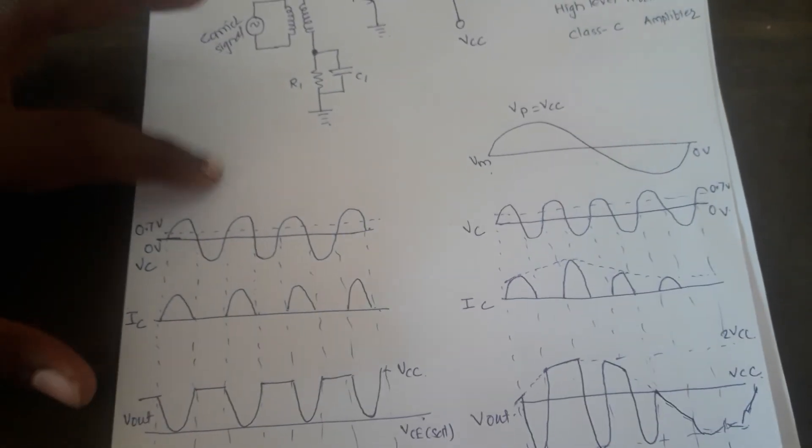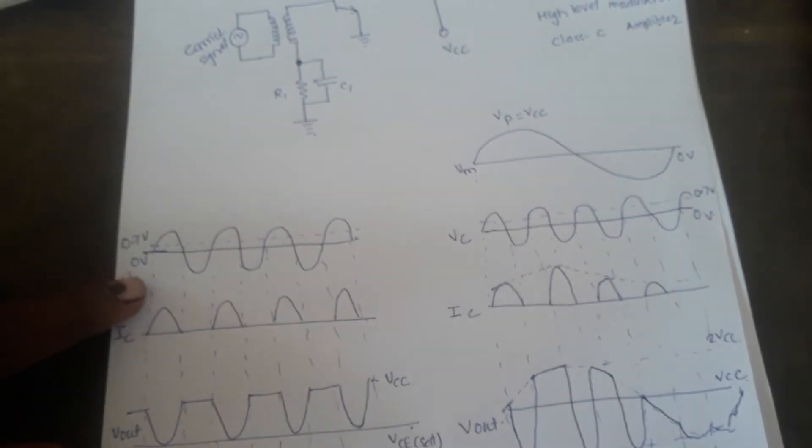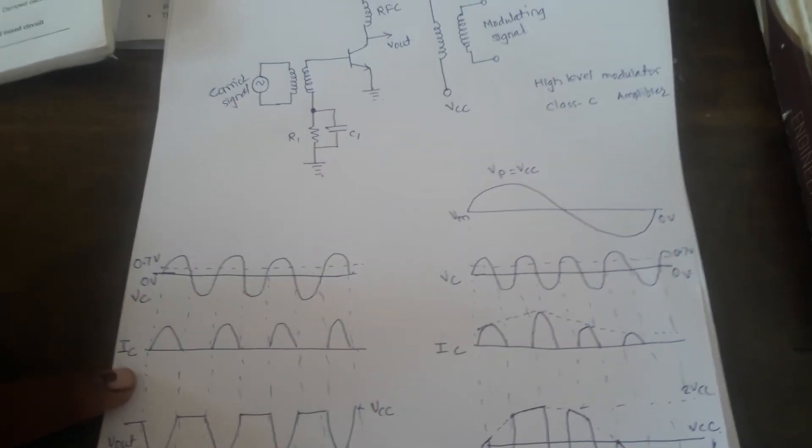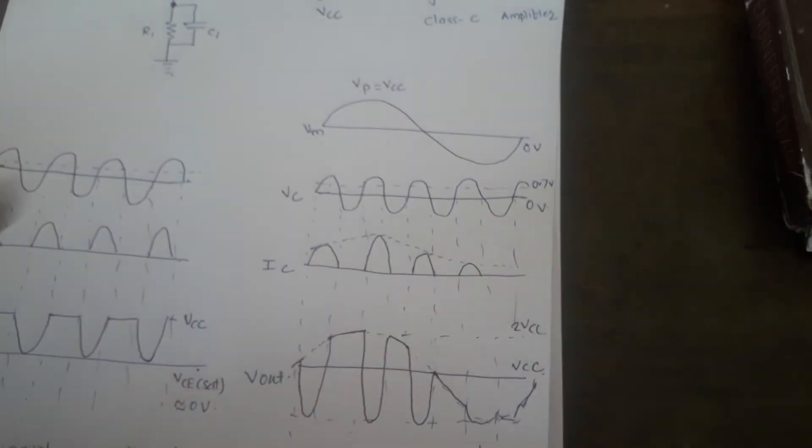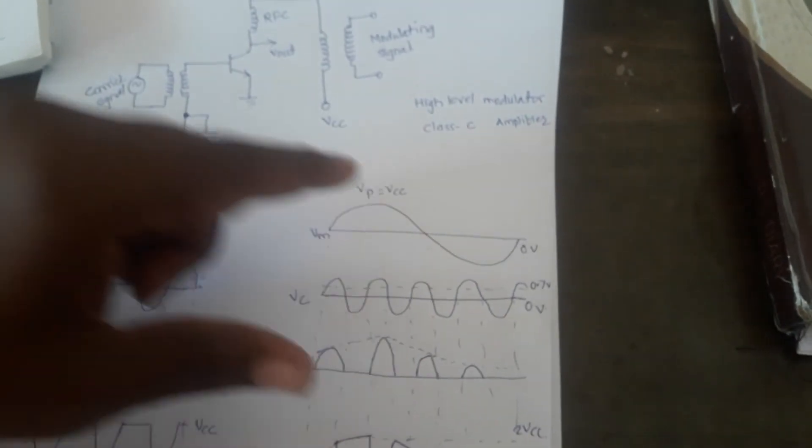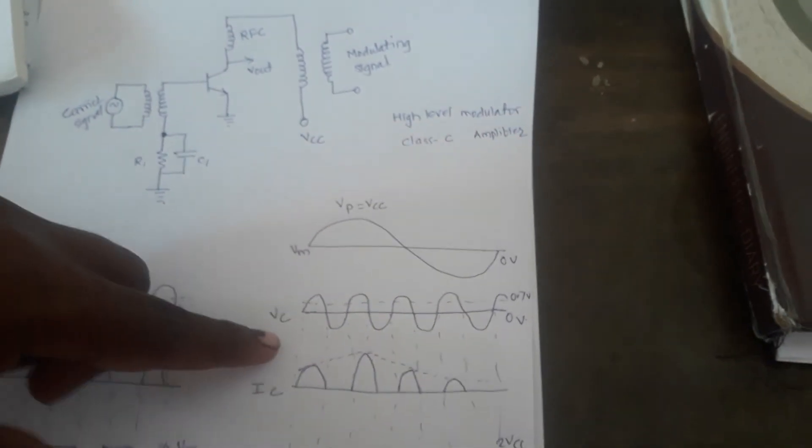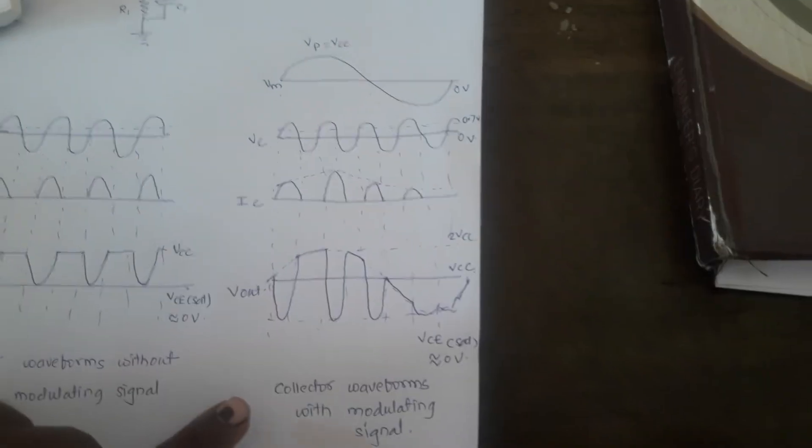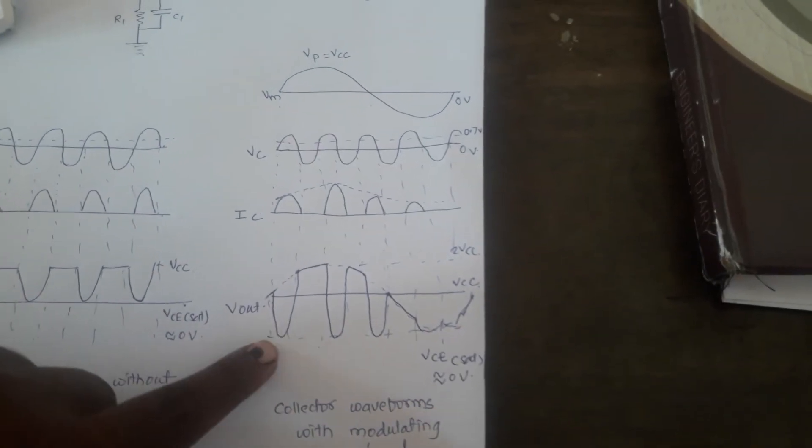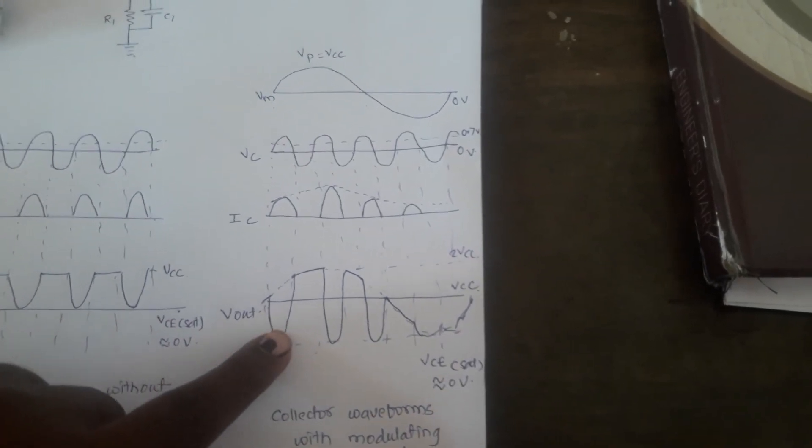Here in this particular diagram we are observing there is no modulating signal present. This is VC, then IC collector current and the output waveforms are like this. But when we apply some modulating signal, it will get multiplied with this particular VC and finally we are getting amplitude modulated waveforms like this at the output side.